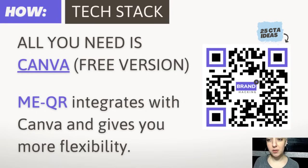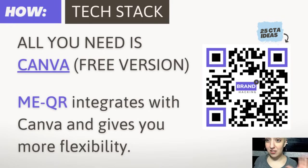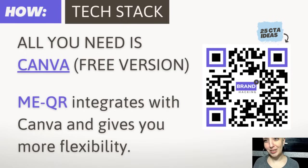There are two things you can do in Canva. You can create a QR code to download and use elsewhere — maybe you want to get materials printed with this QR code on it. Or you can create the entire project, like a postcard, and plop your QR code right in there. Then you can download the design file, share it, or use Canva's straight-to-print action to order the material printed and fulfilled for you.